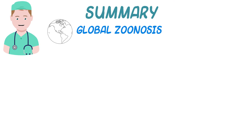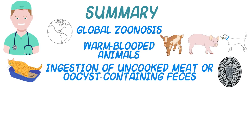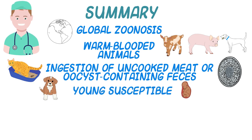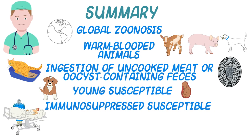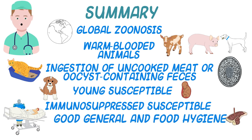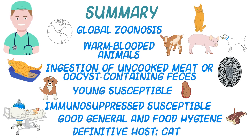Toxoplasmosis is a zoonotic disease that can occur in all warm-blooded animals and is spread through ingestion of uncooked meat or through fecal contamination containing oocysts. The young, developing animal or person, or those who are immunosuppressed, are at the greatest risk. Prevention is generally addressed by good general and food hygiene, particularly around the presence of the definitive host, the cat.